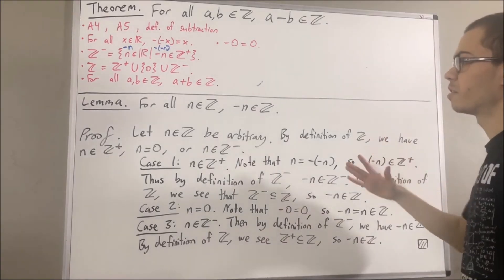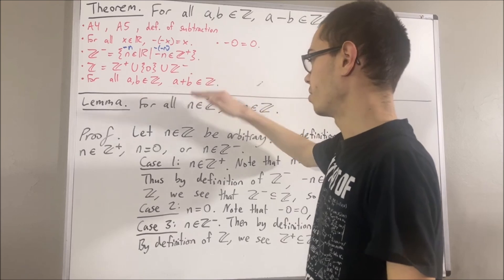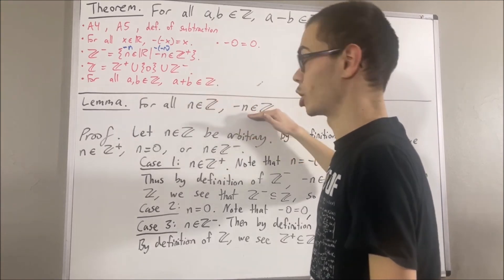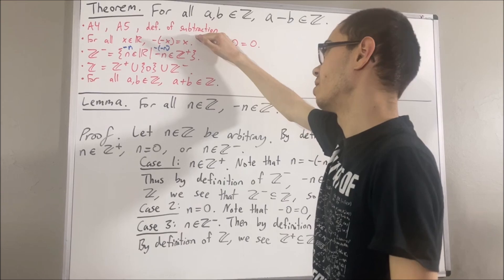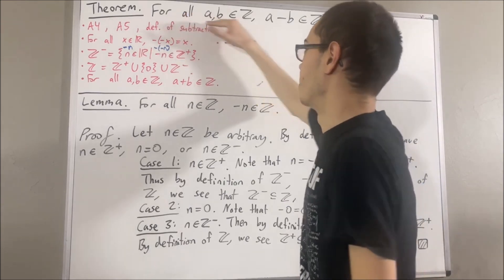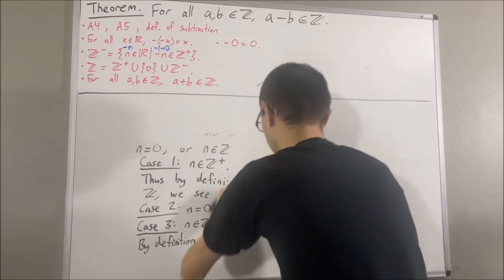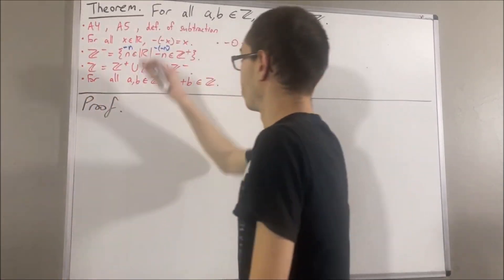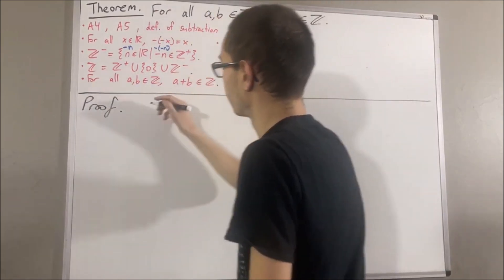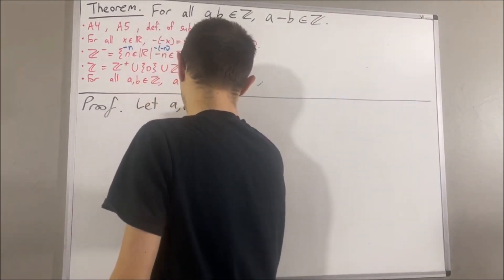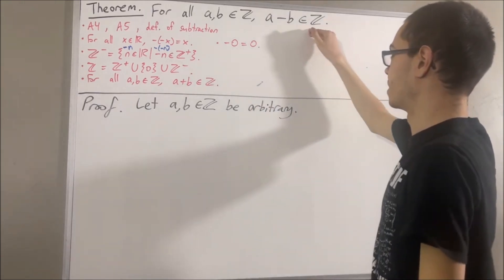Using the fact that the integers is closed under addition, and using the fact that the negative of any integer is an integer, and using the definition of subtraction, it's going to be easy to prove this theorem. To start out the proof of this theorem, let's first give ourselves two arbitrary integers a and b. The whole goal is to show that a minus b is an integer.